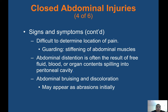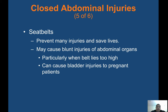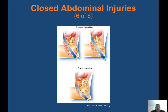Seatbelts prevent many injuries and save lives but may cause blunt injuries of abdominal organs, particularly when the belt lies too high, and can cause bladder injuries in pregnant patients. You're always looking for seatbelt marks on every patient. If the lap belt is positioned too high, it's going to compress some of the organs in a car accident.